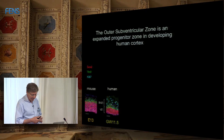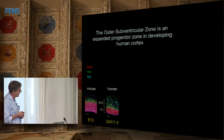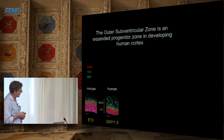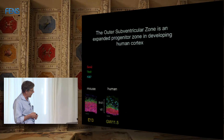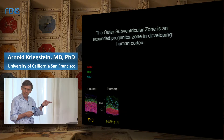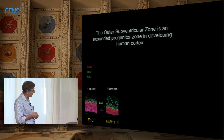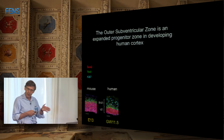Looking at cell types in the progenitor regions, we now have markers for these — we've had them for over a decade. Shown here in red are the radial glial cells, those neuroepithelial descendants generating all the rest of the cells in the brain. They're also producing cells stained with TBR2, a transcription factor expressed in these transient amplifying or intermediate progenitor cells — also referred to as basal progenitors, though I'll refer to them as intermediate progenitors.